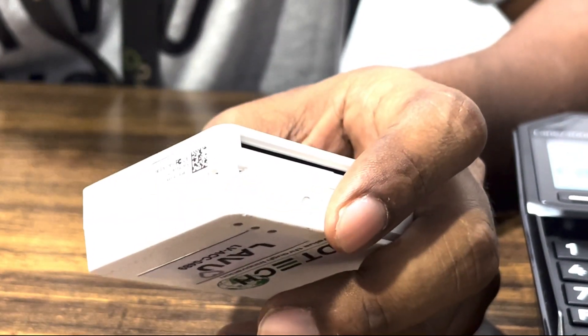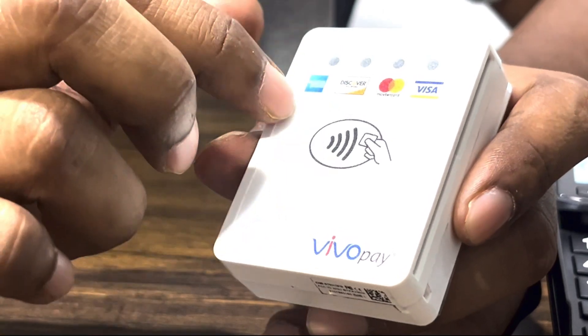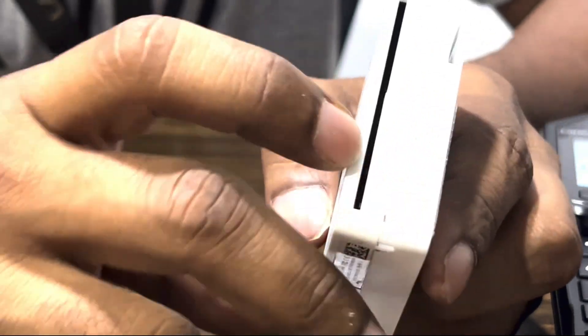So this will reset the reader completely. Allow the reader to reset for a couple of seconds, then find the power button here on the side and hold it down.